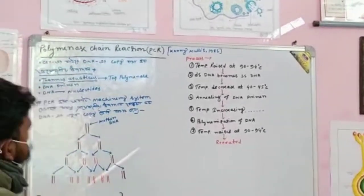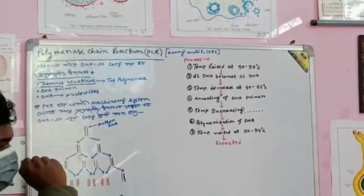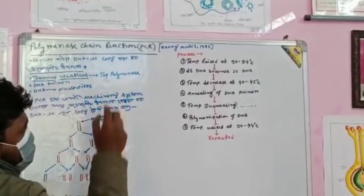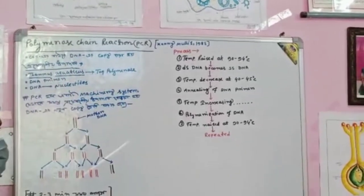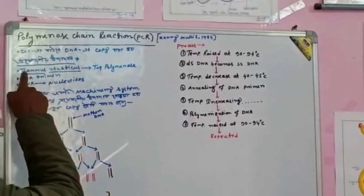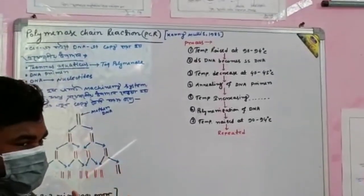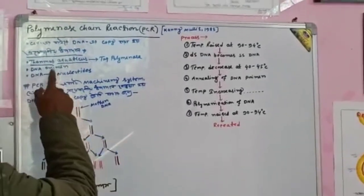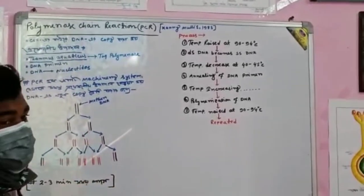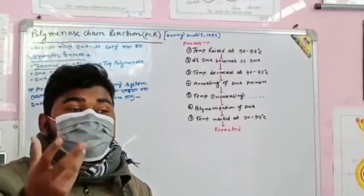The bacteria is called Thermus aquaticus, which has a polymerase. Polymerase is called replication. Thermus aquaticus relates to temperature, and Thermus aquaticus is called a bacteria. The bacteria is called a prime.